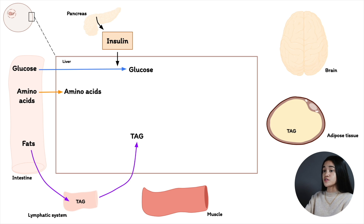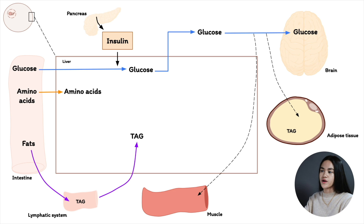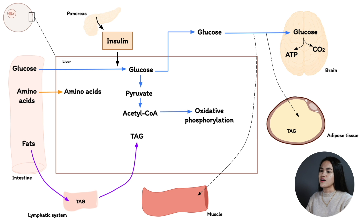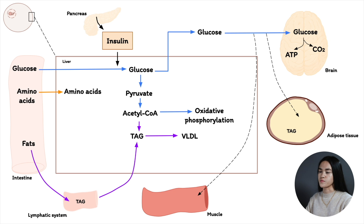Some glucose is transported to the brain and muscle for energy production. In the liver, glucose is oxidized to pyruvate via glycolysis, then oxidized to acetyl-CoA, which can be further oxidized to yield ATP. Excess acetyl-CoA can also serve as a precursor for triacylglycerol synthesis, exported to adipose tissue and muscle.